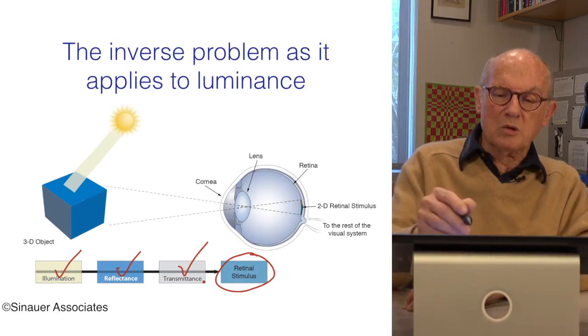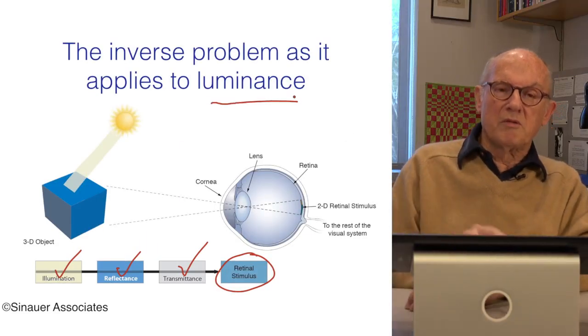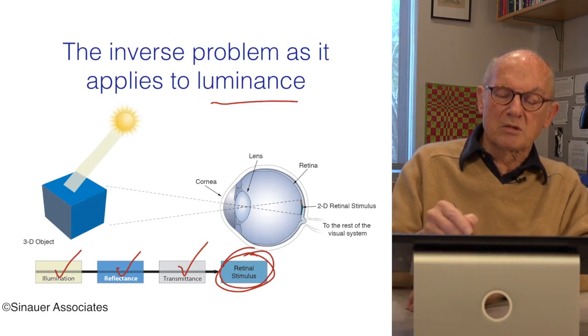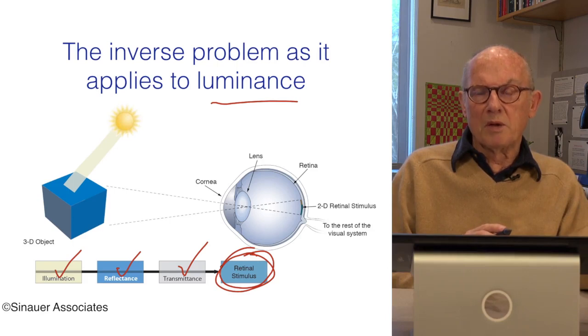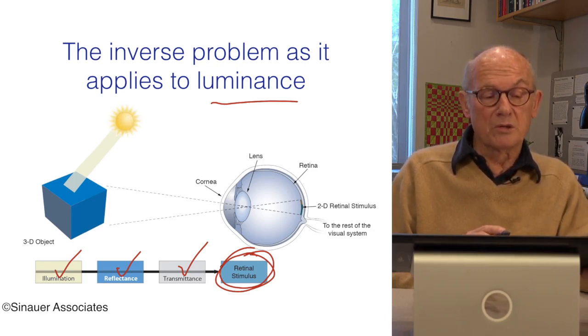No way of getting back to luminance from the stimulus that's on the retina. So, that's the inverse problem as it applies to the light intensities that we see, the lightness or darkness that we see.